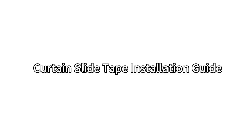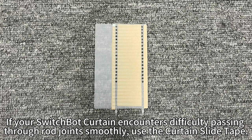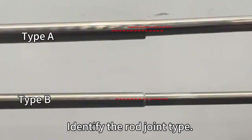Curtain Slide Tape Installation Guide. If your SwitchBot curtain encounters difficulty passing through rod joints smoothly, use the Curtain Slide Tape. Identify the rod joint type.